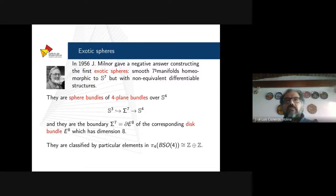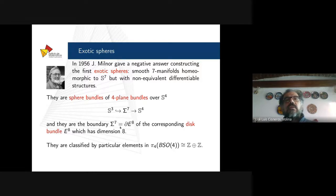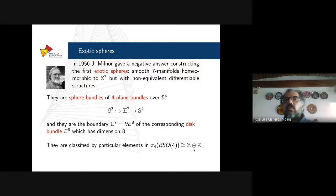How are these manifolds? They are sphere bundles of four-plane bundles over the sphere of dimension 4. The inverse image of every point in S4 is a three-dimensional sphere. These seven-manifolds are boundaries of the corresponding disk bundle, denoted E8, which has dimension 8. These sphere bundles or disk bundles are classified by elements of the fourth homotopy group of the classifying space of the group SO(4), which is isomorphic to the direct sum of two copies of the integers — so these spaces are classified by two integers.